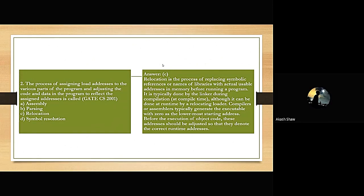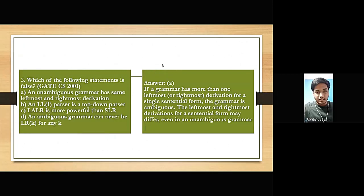The answer is C — relocation. It is typically done by the linker during compilation, although it can also be done at run time by a relocating loader. Compilers or assemblers typically generate the executable with zero as the lowest starting address. Before execution of object code, these addresses should be adjusted so that they denote the correct runtime addresses.